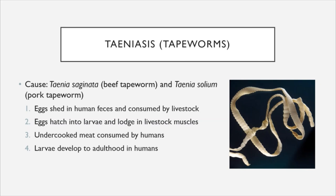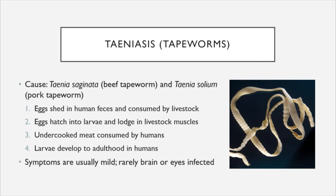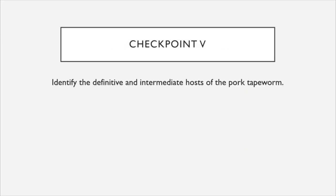Symptoms are usually mild if the pathogen remains confined to the digestive tract, but rarely it can migrate into other areas. When the brain or eyes become infected, the disease can become life threatening. Checkpoint: What are the definitive and intermediate hosts of the pork tapeworm?